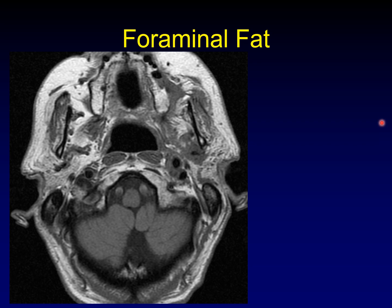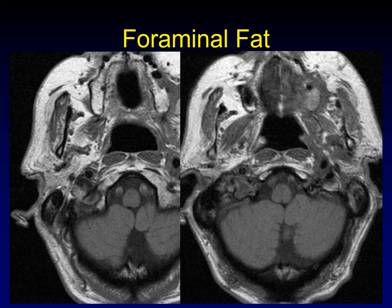Obliteration of foraminal fat is a critical finding for perineural spread, and T1-weighted images without contrast are really helpful. Here we see normal bright fat surrounding the nerve in the stylomastoid foramen on the normal side. On the abnormal side, that's all grayed out — you can't pick out a nerve surrounded by pristine fat anymore. That's tumor filling in the fat of the stylomastoid foramen, another critical finding. A little further up, the tumor is more evident as it extends along the vertical segment of the facial nerve.